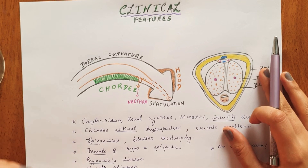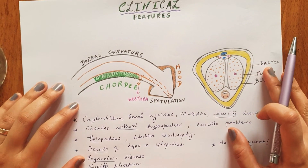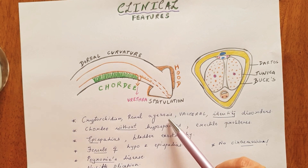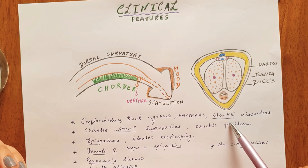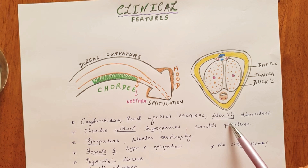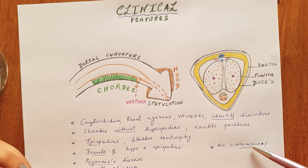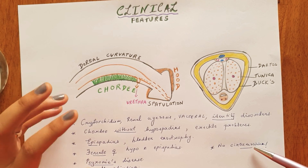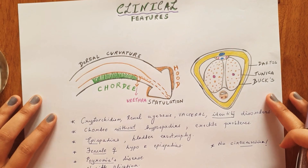There are other anomalies associated with hypospadias, including cryptorchidism or undescended testes, renal agenesis, and the spectrum of disorders of sex development. It is important to identify these disorders because in cases where circumcision is performed, the excess prepucial skin that would be discarded is actually needed for correcting hypospadias later on. Therefore, circumcision should not be done in these cases at all.